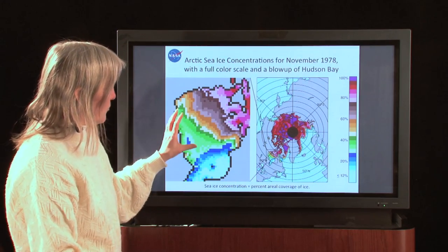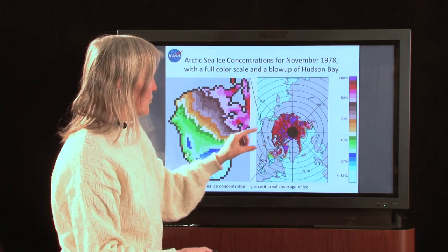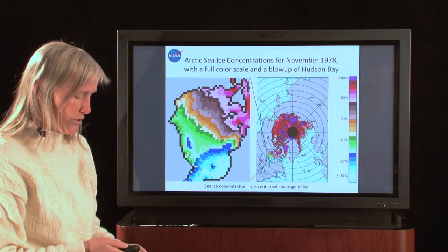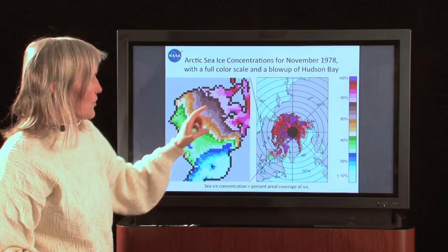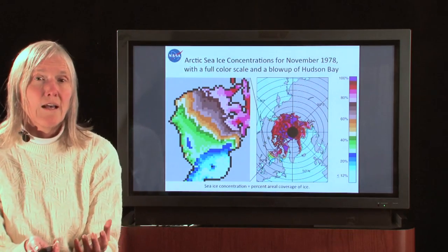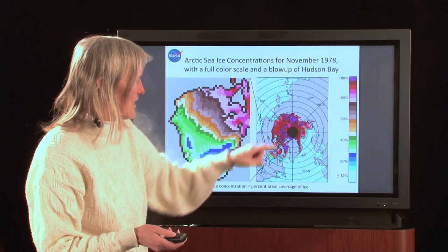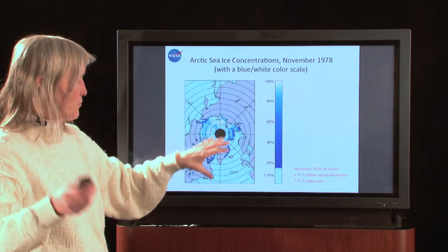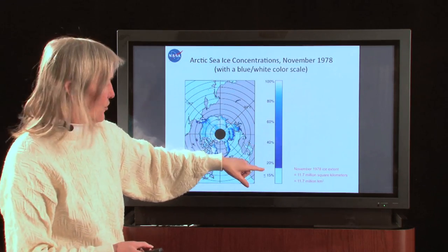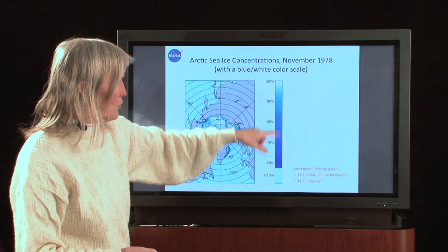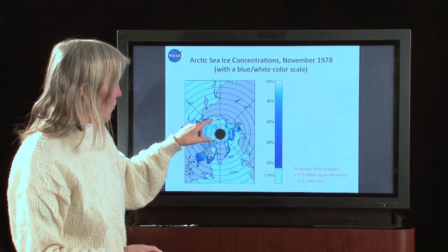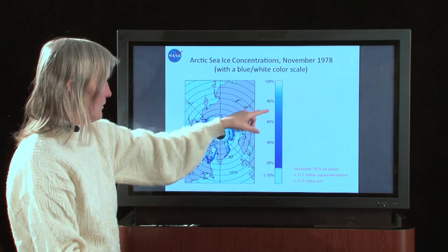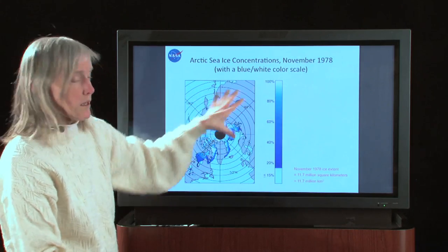The computer is able to color-code these so that each color indicates how compact the sea ice is in terms of percent aerial coverage. A full color scale gives scientists many details, but a lot of people get confused by all those colors, so they prefer when we change the color scale to only blues and whites — white being pretty much 100% covered by sea ice, and deeper blues indicating less and less sea ice coverage.